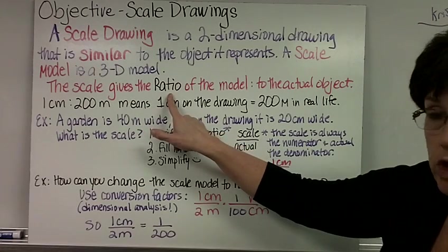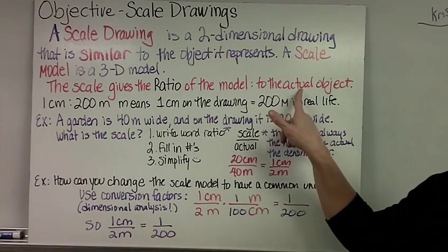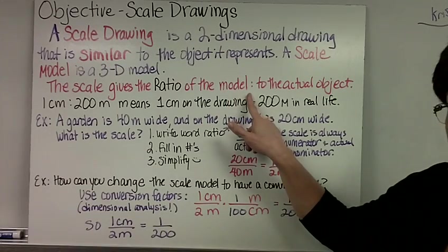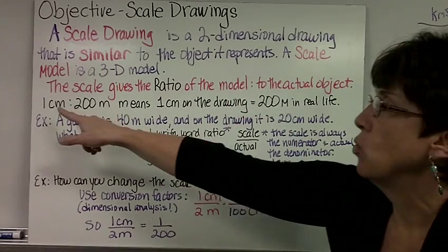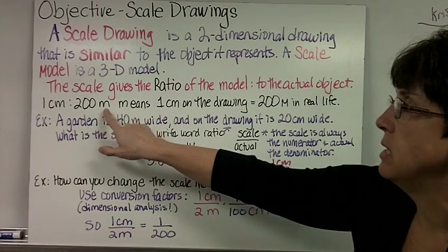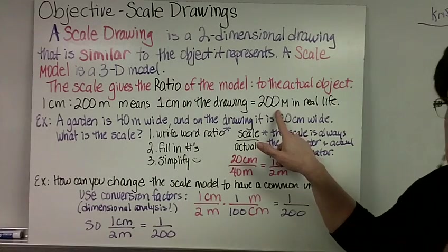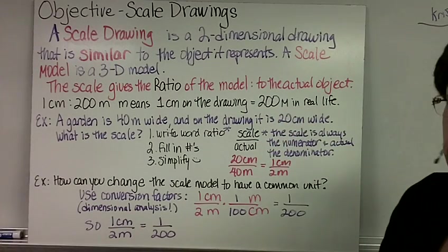The scale gives the ratio of the model to the actual object. Notice I wrote it with a little colon like it was a real ratio. So one centimeter to 200 meters means one centimeter on the drawing equals 200 meters in real life.